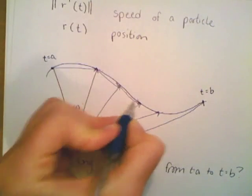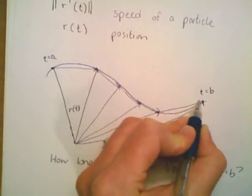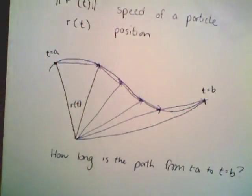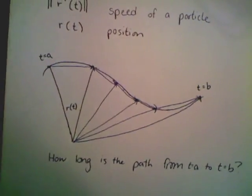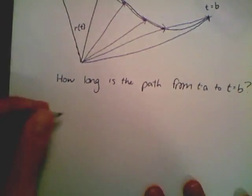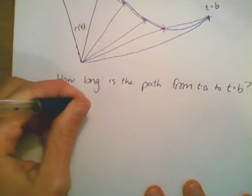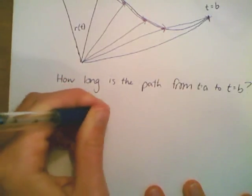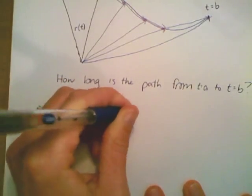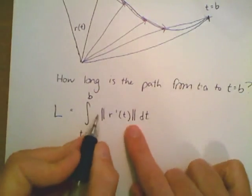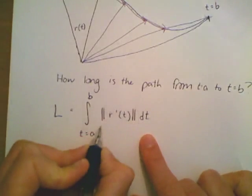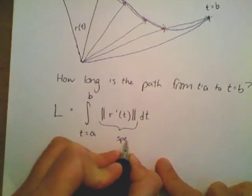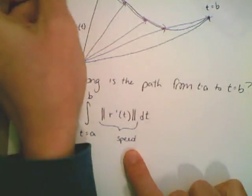How do we measure that? We use the beauty of calculus. The idea is that we break up the path into pieces. If we approximate the length of each piece, that approximates the length of the curve. As the pieces get smaller and smaller, the approximation gets closer and closer to the actual path. So the arc length l equals the integral from t equals a to b of the magnitude of r prime of t dt — and that quantity inside is the speed.